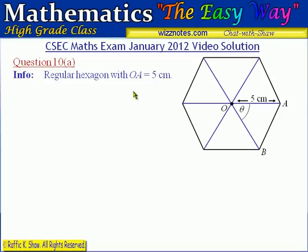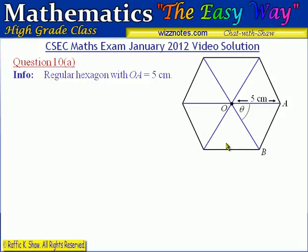Welcome to question 10A, CSEC math exam January 2012 video solution. In this question we are given the diagram of a regular hexagon. We are told it's a regular hexagon and OA is 5 centimeters. O is the center of this hexagon. Because it's a regular hexagon, all six sides are equal in length and all internal angles are also equal.